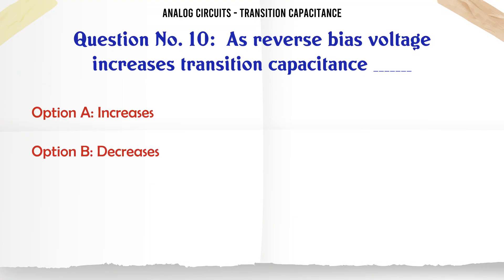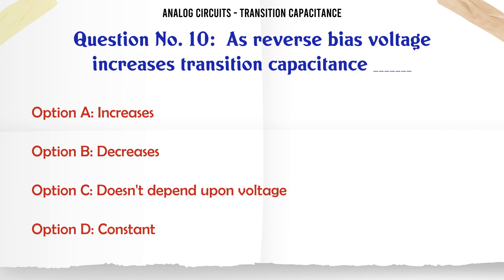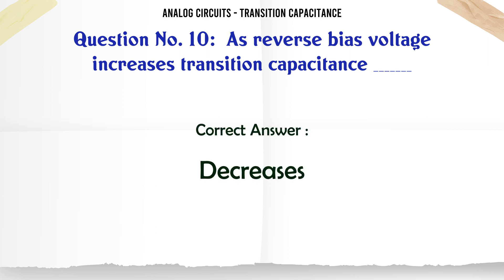As reverse bias voltage increases, transition capacitance: A: Increases, B: Decreases, C: Doesn't depend upon voltage, D: Constant. The correct answer is Decreases.